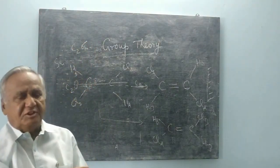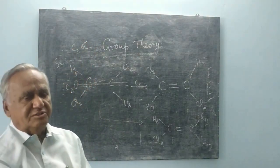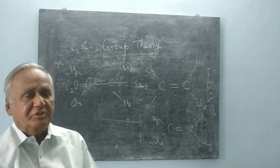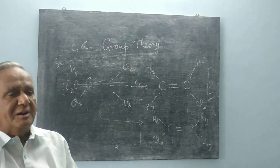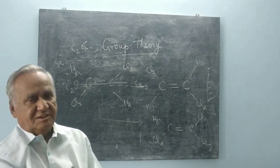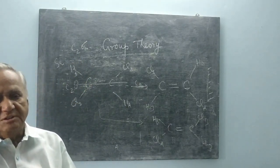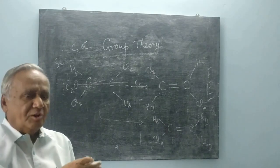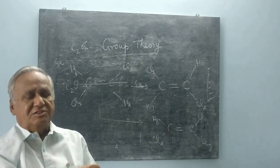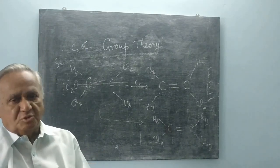S2 is C2 followed by sigma-H. Similarly, you have S3 in molecules: C3 followed by sigma-H. S6 in a molecule: C6 followed by sigma-H, and so on.